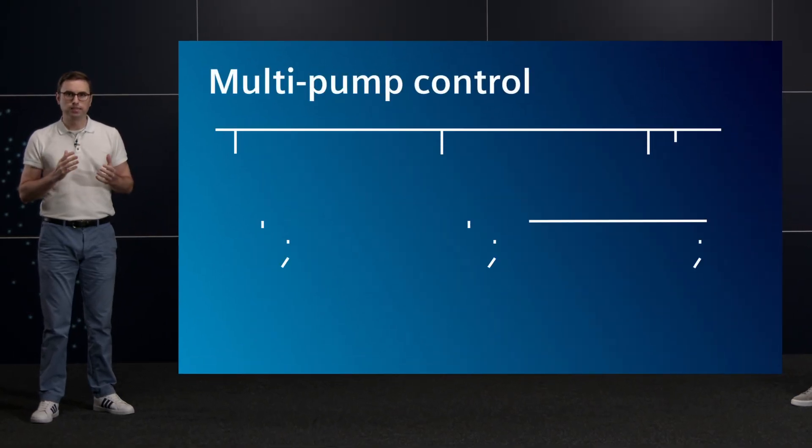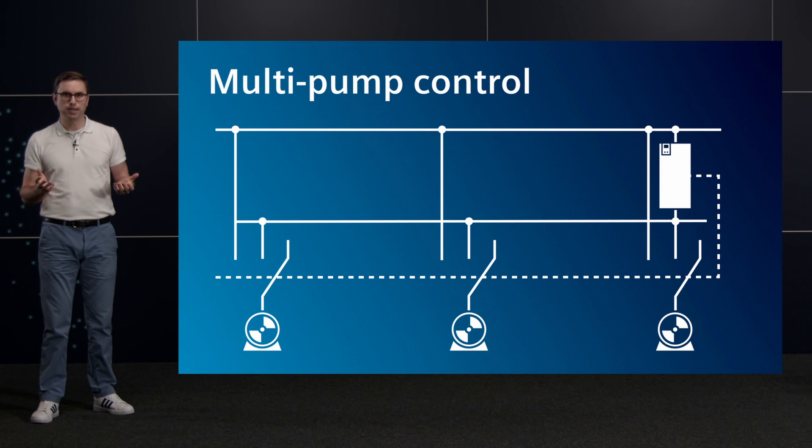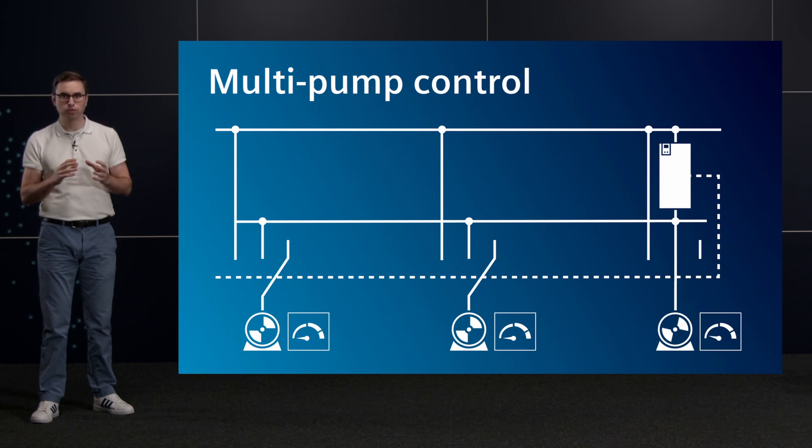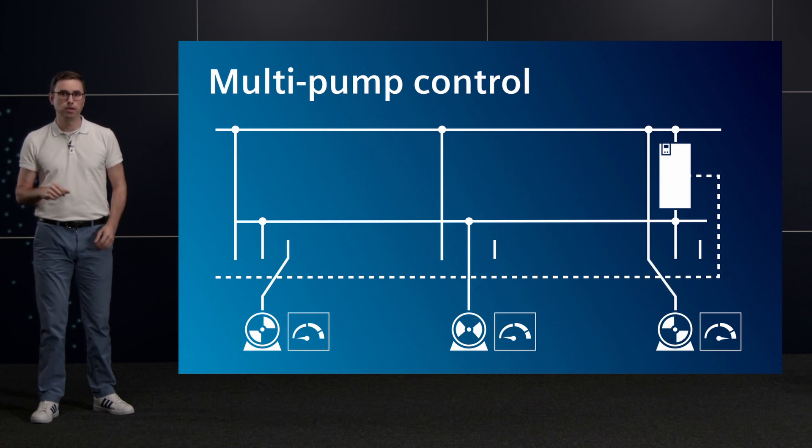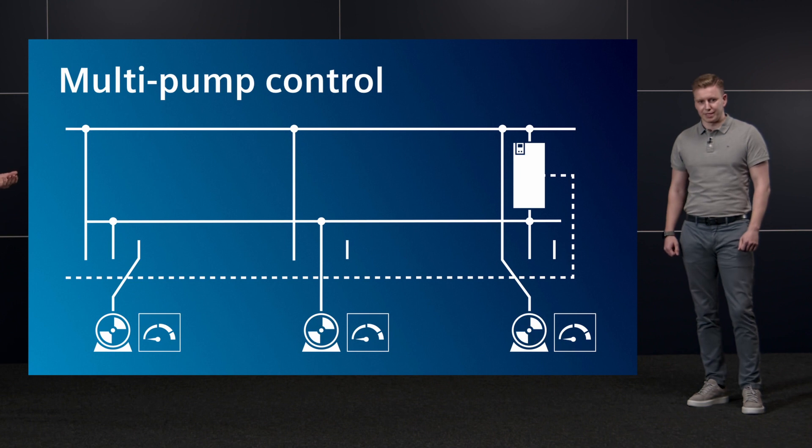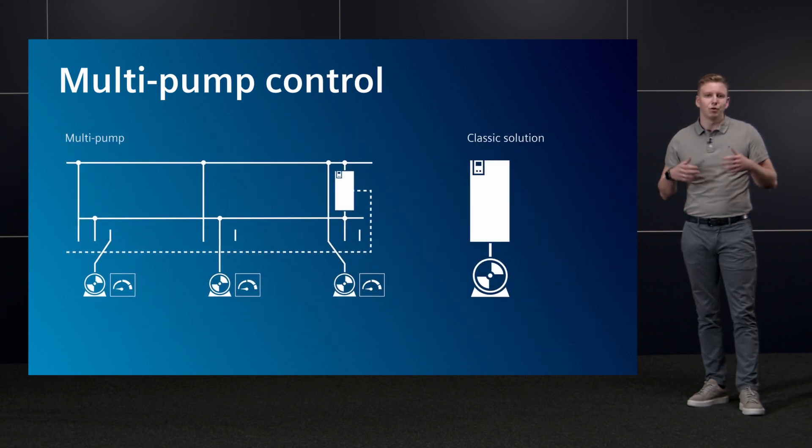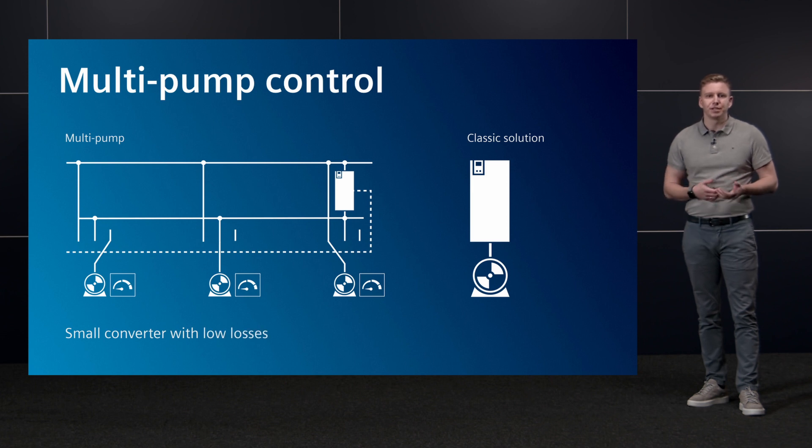Yes, unlike cascading, this multi-pump control function does not assign the converter to a pump motor in a fixed way. The converter is flexibly assigned to the motors via a contactor control. Once a motor has reached maximum speed, it is switched to mains operation and the converter is switched to the next motor. This distributes the operating hours of the individual pumps evenly. A smaller converter can be used for the overall drive train. This reduces losses and avoids the need for motor starters for the other pumps. The scope of this function and the available methods to activate pumps differ from standard to high performance converters.